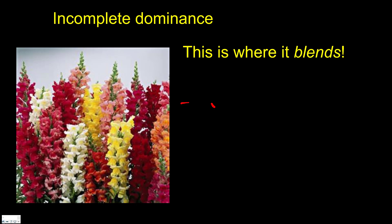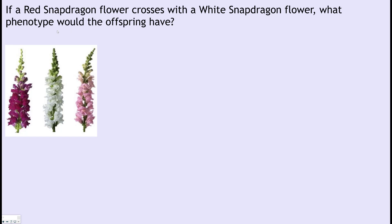Here's the first question: if a red snapdragon flower crosses with a white snapdragon flower, what would the phenotype of the offspring be? If we were to draw the genotype of this, the red one will have the letter R.